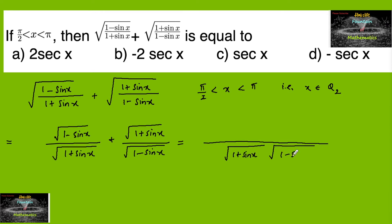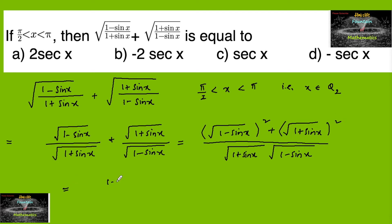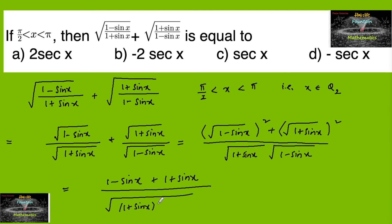The numerator becomes √(1 - sin x) · √(1 - sin x) + √(1 + sin x) · √(1 + sin x), which gives (1 - sin x) + (1 + sin x). We can cancel sin x and -sin x, writing 2 in the numerator.